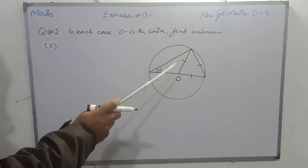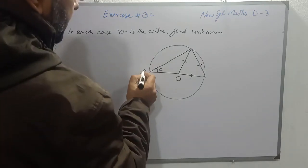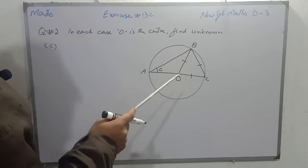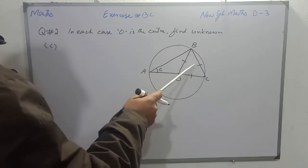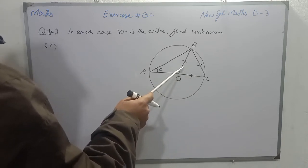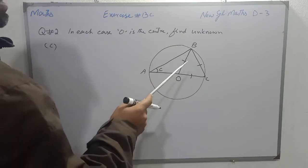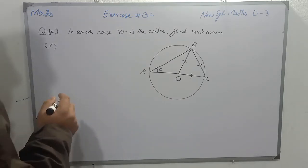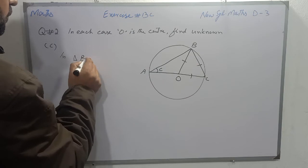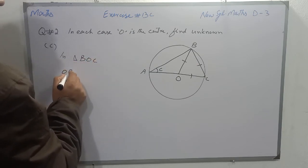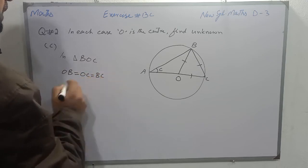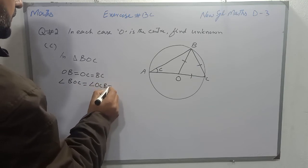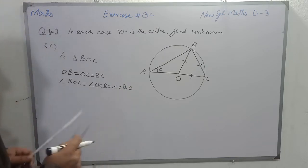Students, part C: there is a circle with center O. I will name the points as A, B, and C. We have to find the value of C. First we will discuss triangle BOC, which is an equilateral triangle — all sides are equal, so all angles are also equal. Keep in mind: triangle BOC is an equilateral triangle, so all angles are equal and will be 60 degrees. OB equals OC equals BC.